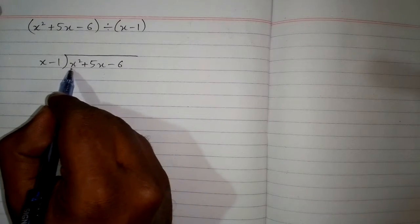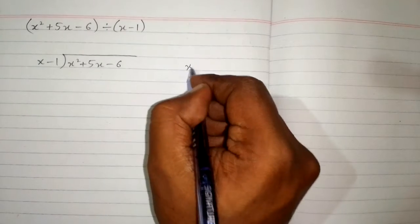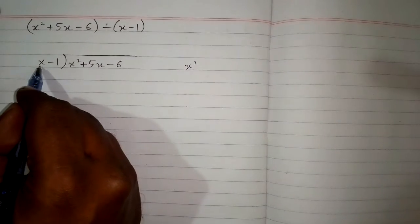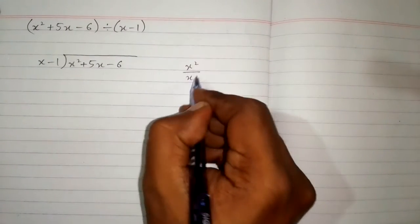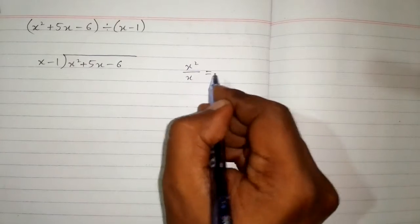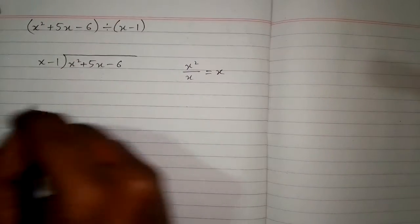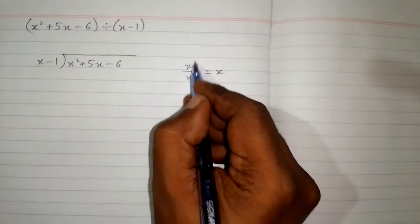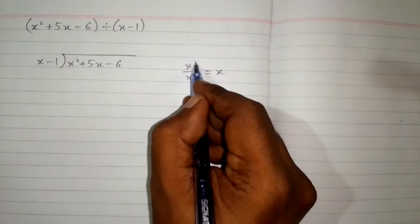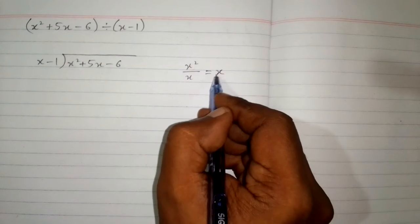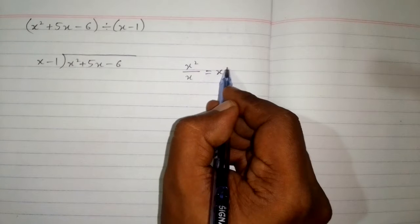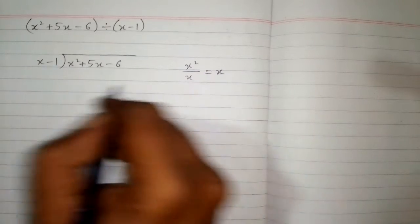Now, we take the first term of the polynomial which is x squared and the first term of the divisor which is x. So x squared upon x is x because we will subtract the power of the variable which is 2 and 1. So 2 minus 1 is 1. So we have x to the power 1 or simply x.